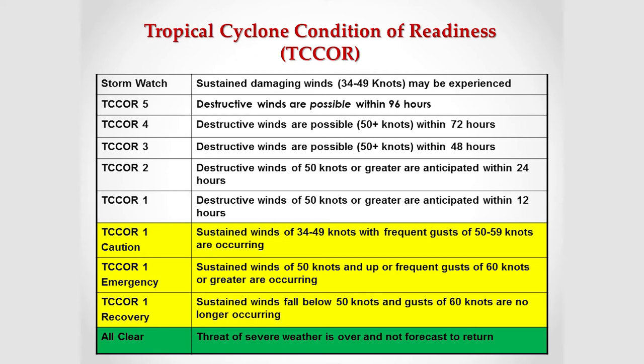T-Core 1 Emergency is the highest level, where we are experiencing sustained winds of 50 knots and greater with frequent gusts of 60 knots and greater. We secure all gates to the base, secure all services, and issue an emergency shelter-in-place order for all personnel. It's simply not safe to be outside — debris could be breaking loose and flying around as a missile hazard — so for the safety of everybody, you will remain inside during T-Core 1 Emergency.